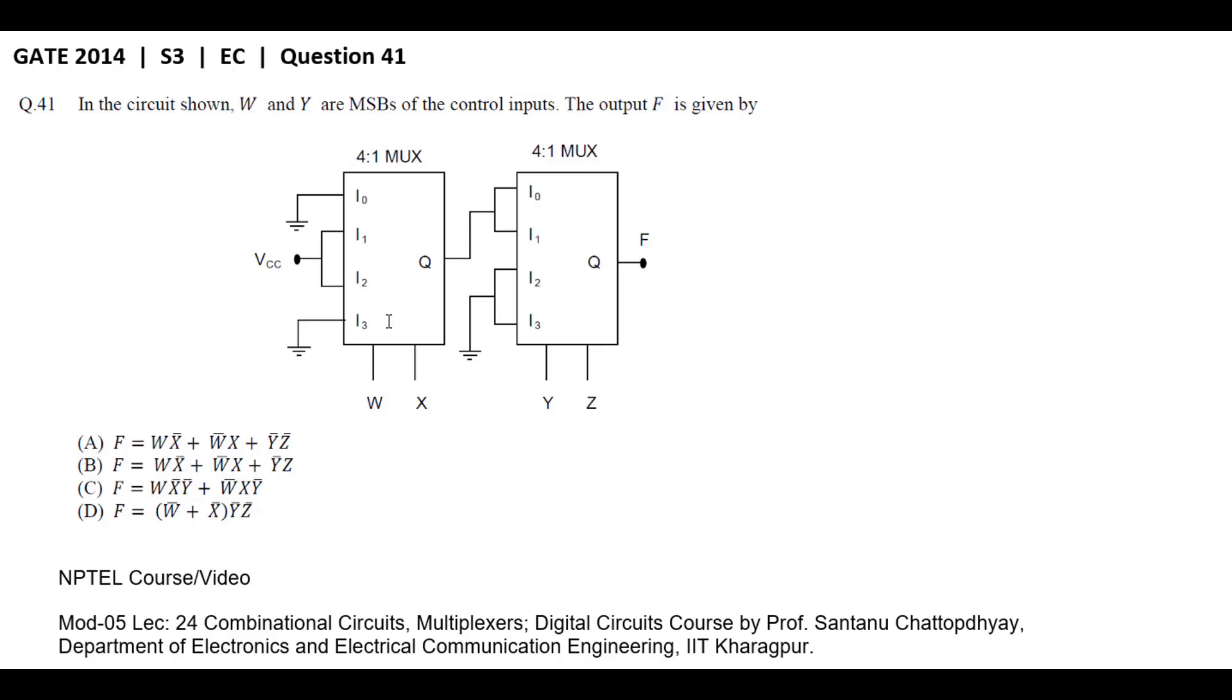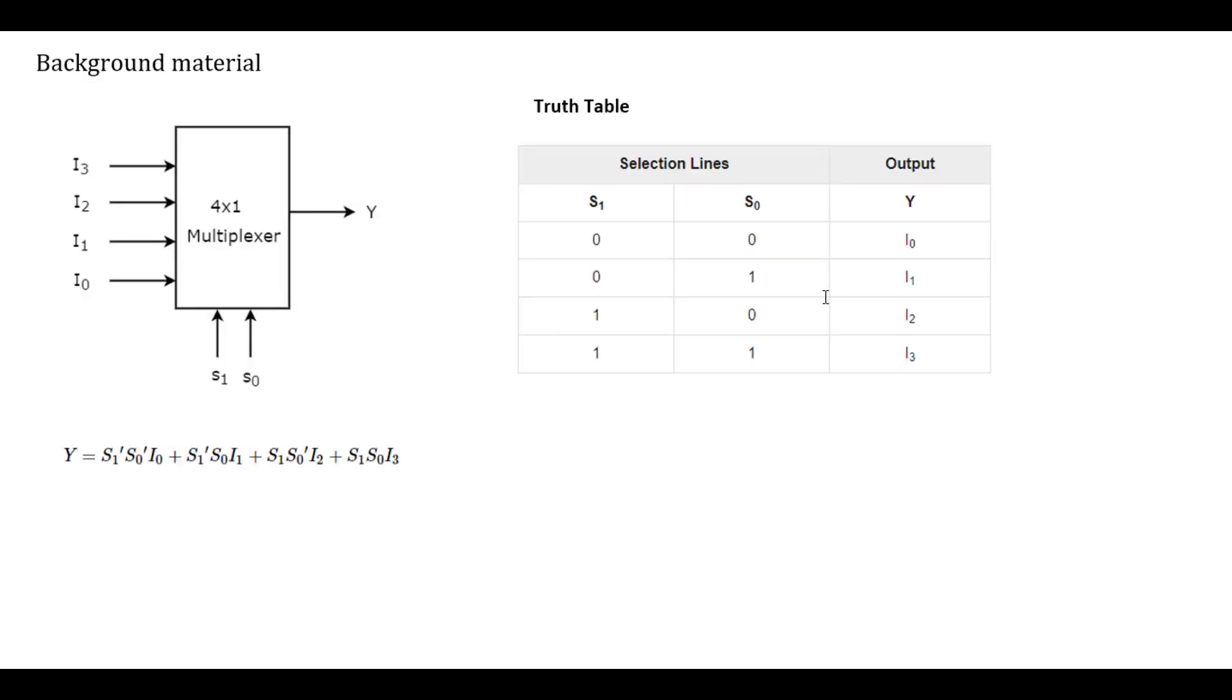This question given in GATE 2014 session 3 ECE paper, a multiplexer based circuit is given and we need to find out the output equation F. The concept related to multiplexers can be found in the following NPTEL video lecture by Professor Santanu Chattopadhyaya, IIT Kharagpur. Before solving this problem, first we will analyze the output equation for a 4 by 1 multiplexer.